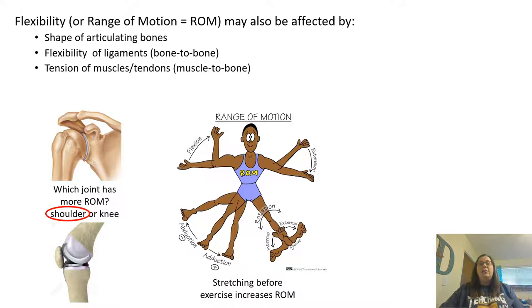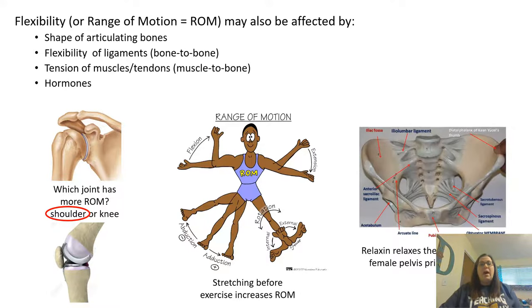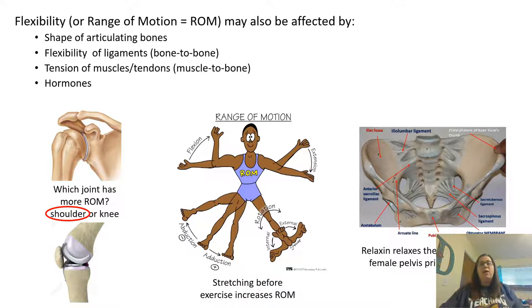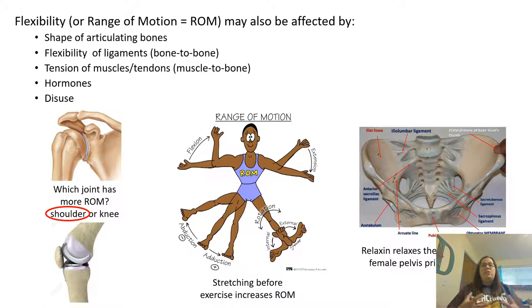The tension of muscles and tendons can also potentially limit your flexibility. Another factor is hormones — relaxin can cause the ligaments in a woman's pelvis to relax so that the bones can separate for the childbirthing process. This hormone is not present very often but is released prior to childbirth. Another factor is disuse — if you don't use it, you'll lose it. If you do not utilize those muscles and stretch them out, disuse is going to be an issue with your flexibility. This is one reason it's really important to stretch your muscles before exercise, because that also stretches out your joints.